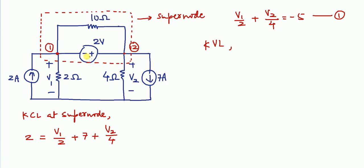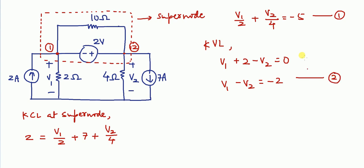Now we apply KVL in this loop to get the relation between V1, V2, and the voltage source. The equation gives V1 − V2 = −2. This is the second equation. By solving equations 1 and 2, we get V1 = −22/3 volts and V2 = −16/3 volts.